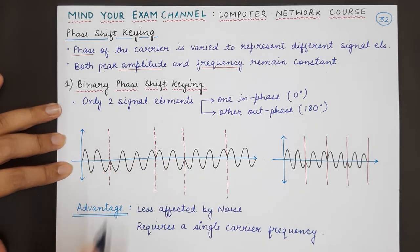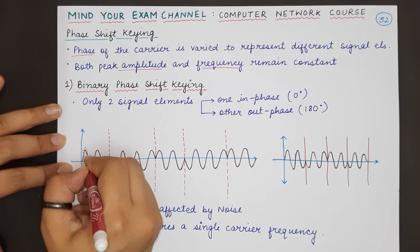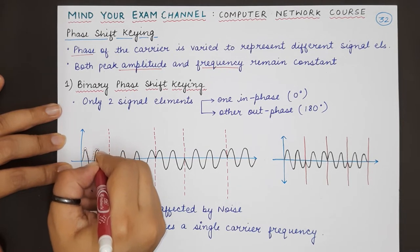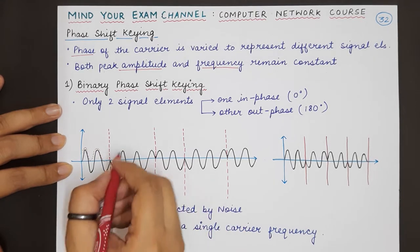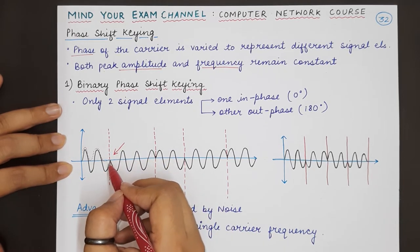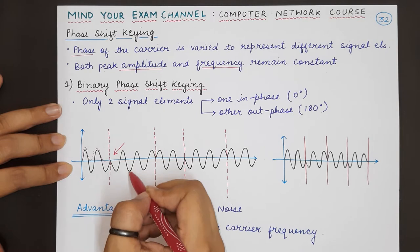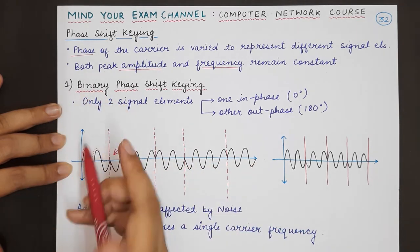This is one signal element which is following a phase of 0 degrees. Once the signal element gets over, the phase is completely changed. The phase now becomes 180 degrees and the signal element gets in the phase of 180 degrees.